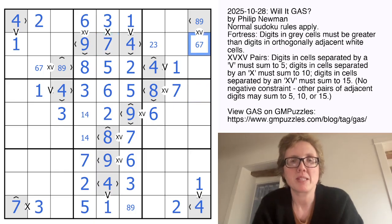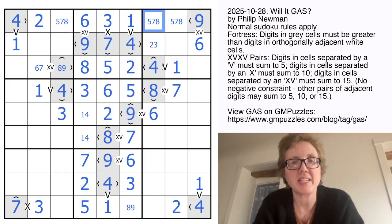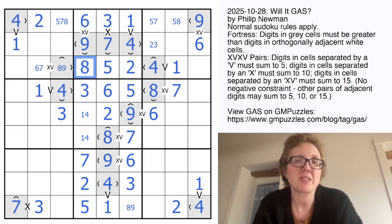We have a 7 in row 2, so that's a 6 and a 9. And now these guys are from 5, 7, 8. That's not an 8 because there's an 8 in its column, and that's not a 7.